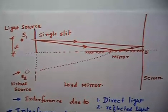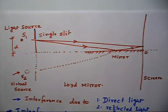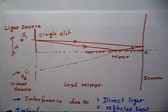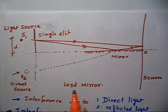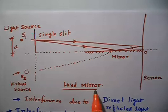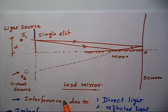Let us discuss this problem. This problem is related to interference and this method is called Lloyd's mirror experiment. This is an experiment done by Lloyd — that is the name of the person. So this experiment is also called Lloyd's mirror experiment.